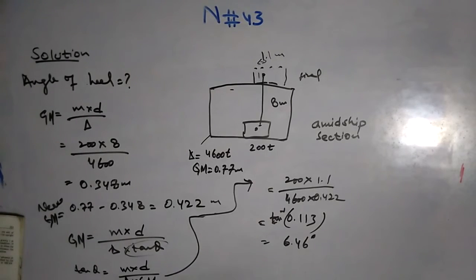Heeling - there are two words you have to understand: heel and list. Heel is due to external force, but list is due to internal forces or the movement of cargo.